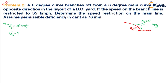Assume permissible deficiency in cant as 76 mm. So E permissible is 76 mm, or if you want to convert it into centimeters, it will be 7.6 centimeters.